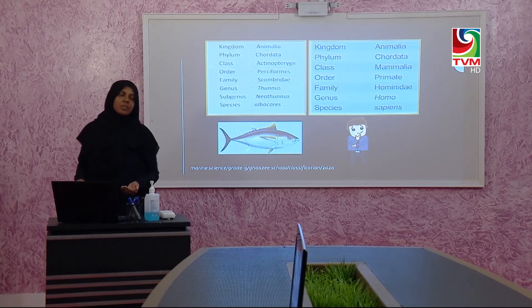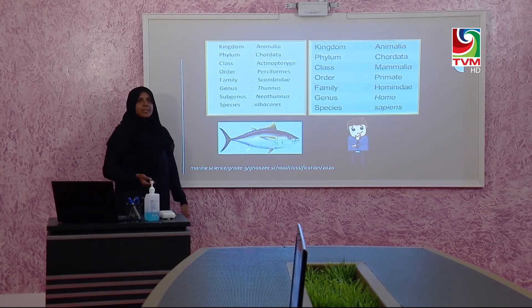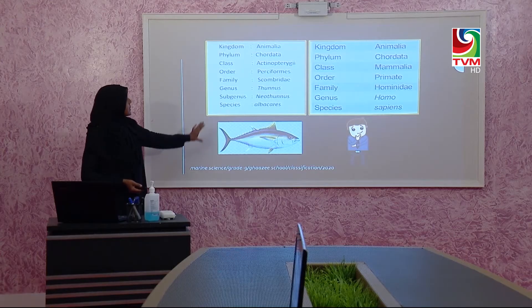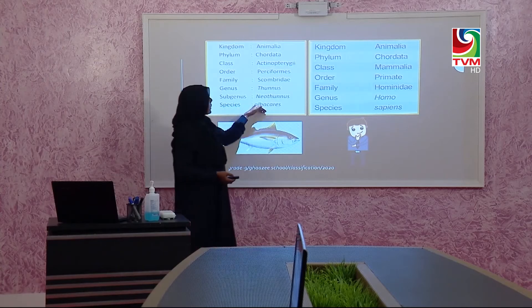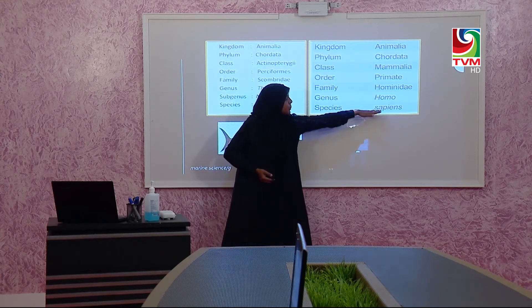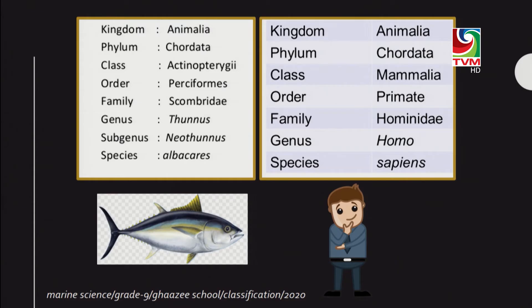When writing a scientific name, always start the genus name with a capital letter, and the species name should start with a lowercase letter. If you write the genus name — like Homo or Thunnus — starting with a lowercase letter, it is wrong. Also remember that the species name should be written in italic form. All other parts are written normally, but the species name is in italics.